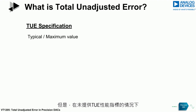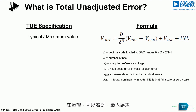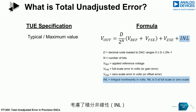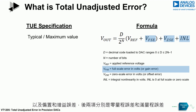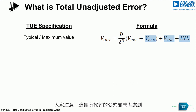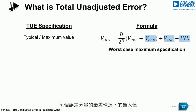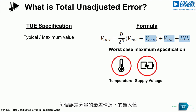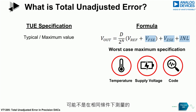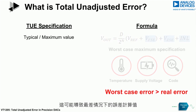However, in the absence of a TUE specification, the worst-case error can be calculated using the formula shown. This worst-case error takes into account the integral non-linearity (INL), offset, and gain errors, as well as zero scale and full scale errors. It should be noted that this formula does not account for the fact that the worst-case maximum specification of each error component may not have been measured at the same condition, which could lead to a worst-case error calculation that looks a lot worse than the actual specification really is.